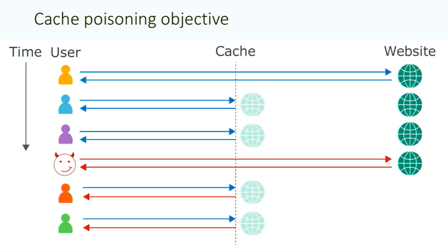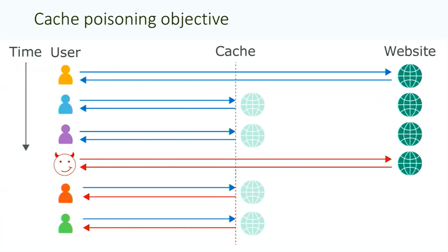The first step to achieving this is to ask the question: how does the cache know that those first three users are all fetching the same resource? It can't be doing a full byte-by-byte comparison on their HTTP requests because HTTP requests are full of all kinds of junk. For example, if those users had different web browsers, the user agent header would be different, so the caching wouldn't really work. Caches address this problem with the concept of cache keys — they say we only care about certain parts of the request, generally just the host header and the request line. So this is all that the cache does a comparison of to work out if two requests are accessing the same resource.